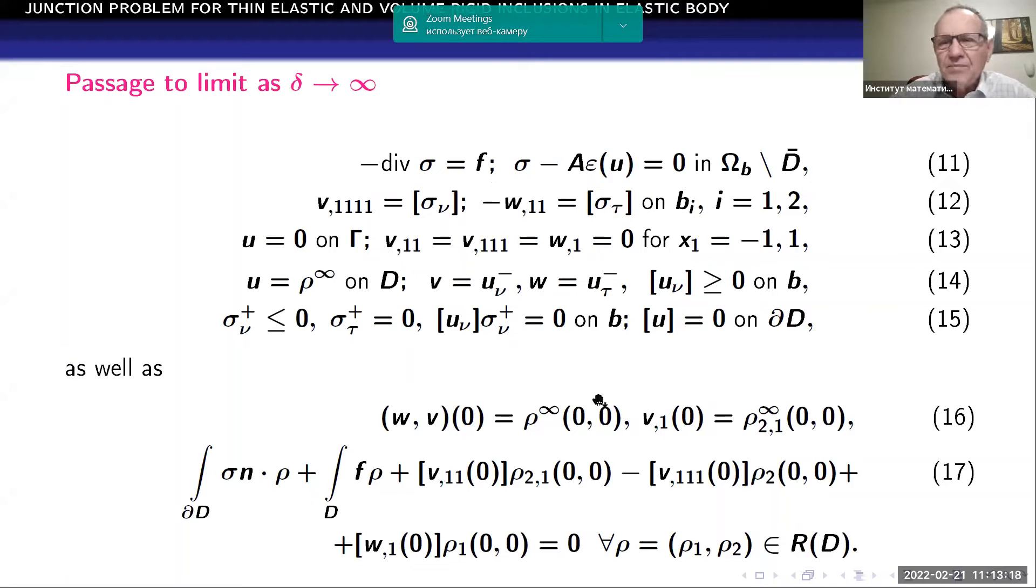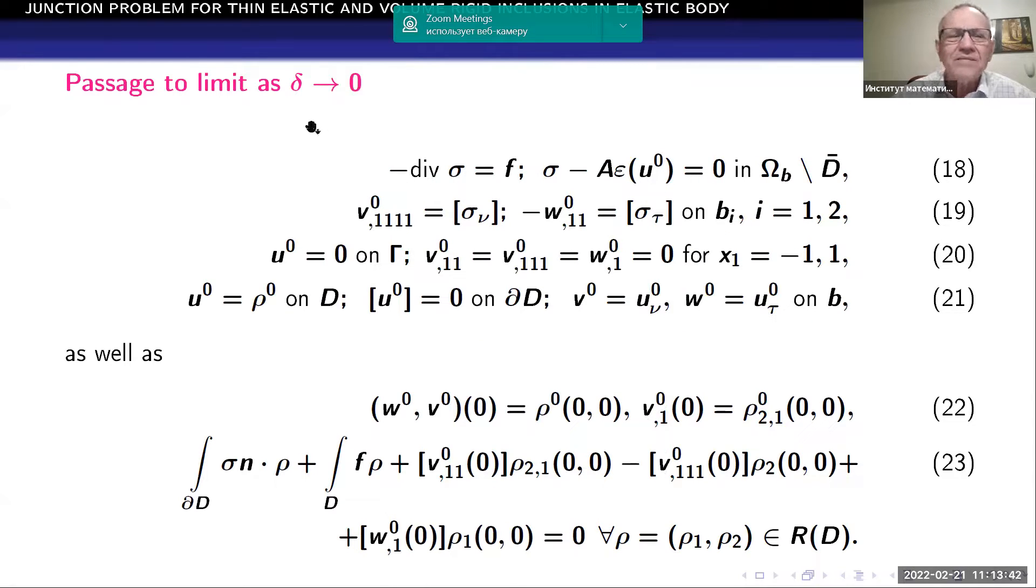Next, we can analyze passage to infinity when delta goes to zero. Because I do not have a lot of time, I just skip this one. It's possible to justify passage to infinity when delta goes to infinity, and we obtain boundary conditions when we have zero friction of the positive crack phase. As well as we can justify a passage to limit when delta goes to zero. This limit case corresponds to the situation that we have no crack. The crack disappears.